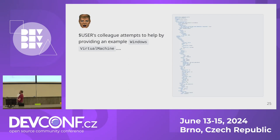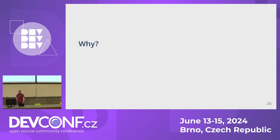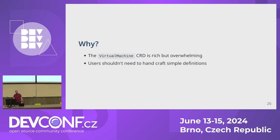A user's colleague attempts to help by providing a Windows example, and you can see there's a lot in it — lots of feature settings, clock configurations, and other things required to get a working Windows instance in KubeVirt. The virtual machine CRD is rich but ultimately very overwhelming. Our users shouldn't have to hand-craft simple definitions, and we don't want to block casual users trying to stand things up or experiment.